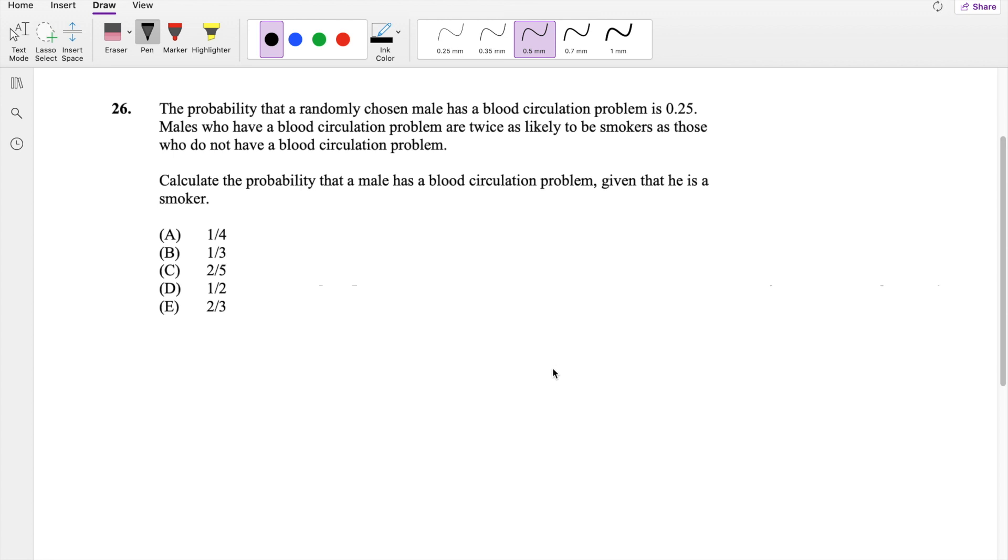Okay, as soon as you already attempted it, let's just dive right in. So they first give you the probability that they have a circulation problem, which I'm going to denote by C, is equal to 0.25.